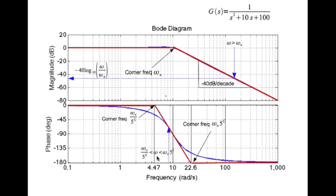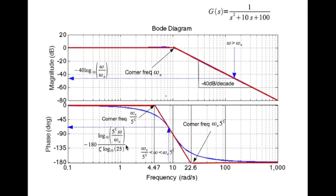The asymptotic phase is 0 until the first corner frequency and minus 180° from the second corner frequency (ωₙ times φ to the power ζ) to infinity. For any frequency between the first and second corner frequencies, the phase is given by minus 180 times log base 10 of (φ^ζ × ω/ωₙ), divided by ζ times log base 10 of 25.